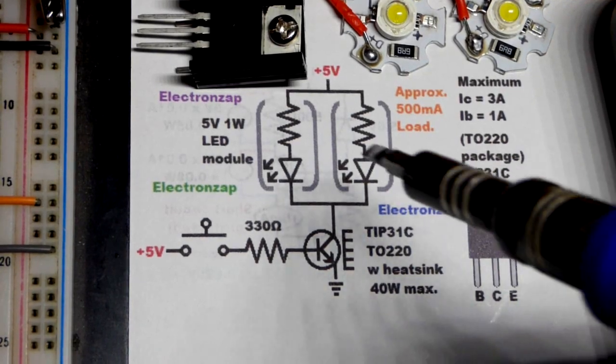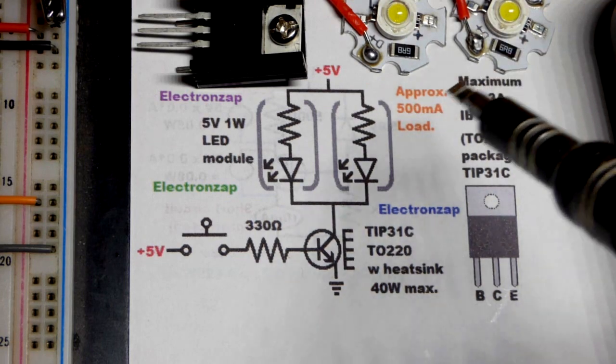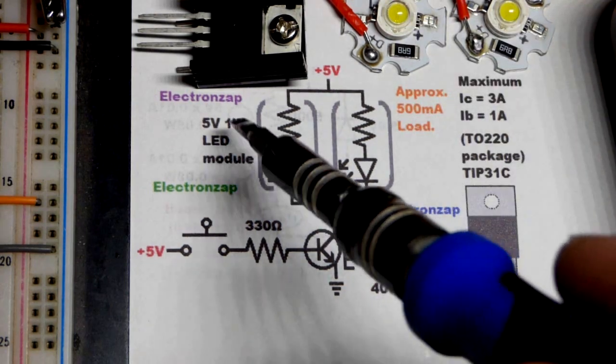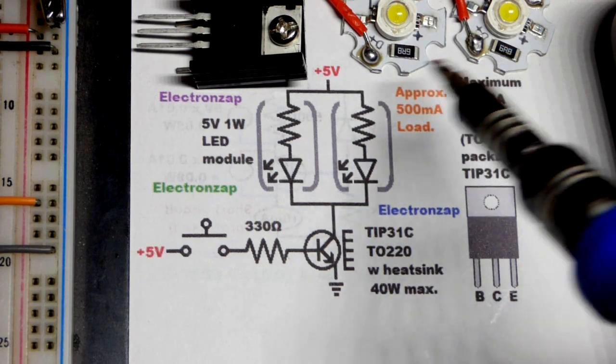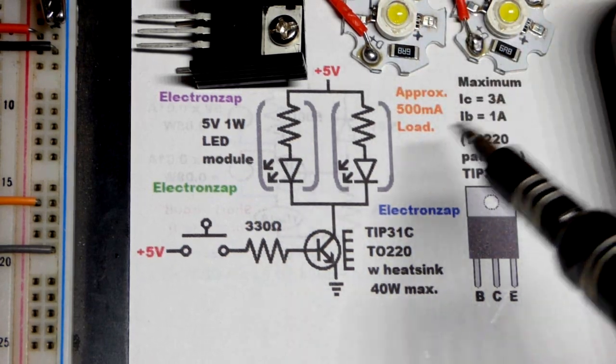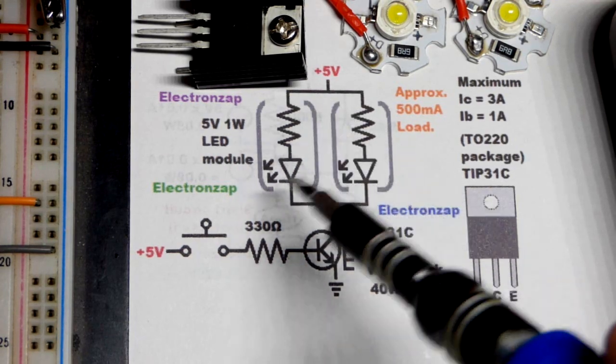So now in this video we're going to switch a couple of my LED modules. They are brighter LEDs, one watt LEDs. They're made for 5 volts because the module has a resistor on there. I did have to solder the wires on myself, but in any case we have two of them.